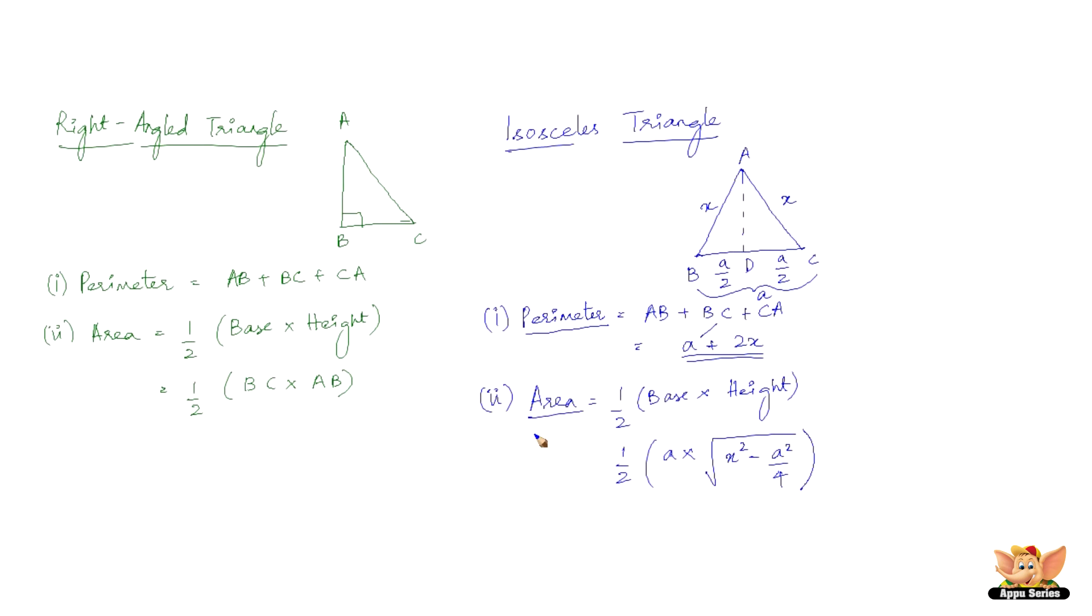Now let us see how to calculate the area. Area is the same: ½×base×height. Here the base is a/2+a/2 which is a. But how do you calculate the height? Well, this is a right angle triangle. So you have the length of this side and you have the length of this side. All you have to do is find the length of the middle dotted line by using the Pythagoras theorem, which leads to this. Hence we found the area of the isosceles triangle.